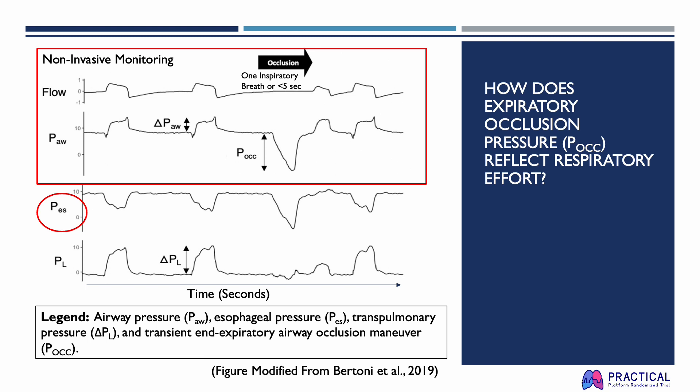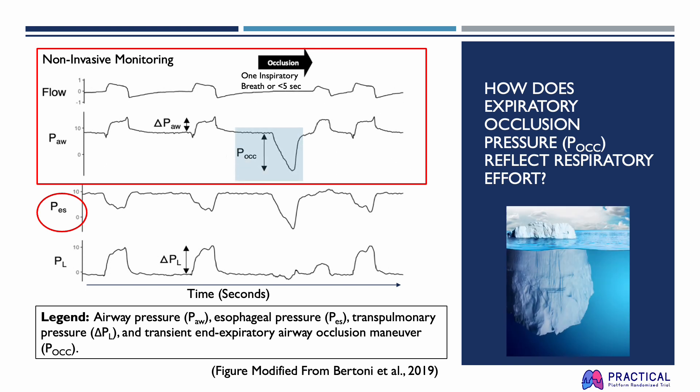A way to non-invasively assess excessive inspiratory effort and dynamic lung stress of patients on mechanical ventilation is to measure the expiratory occlusion pressure. To measure this pressure, an expiratory hold is applied for the length of one inspiratory breath, or up to five seconds if no respiratory effort develops. If the patient is apneic during the occlusion, no pressure swing will develop and PEOC would equal zero centimeters of water. On the other hand, if the patient is breathing spontaneously and making inspiratory efforts, they will generate a negative pressure swing against the occluded airway. This negative pressure swing reflects the magnitude of respiratory effort and reveals the iceberg under the water, so to speak.